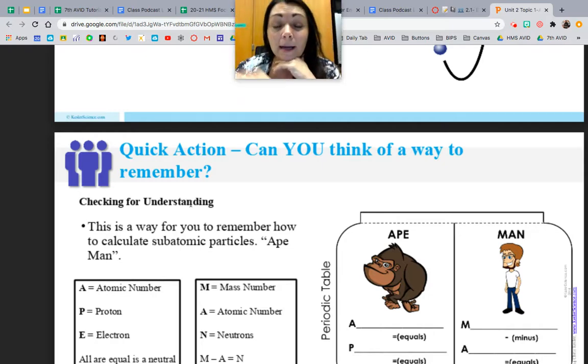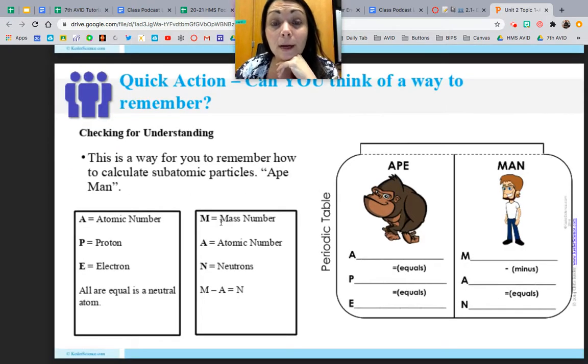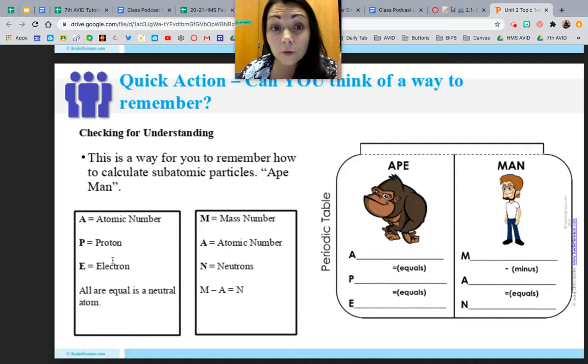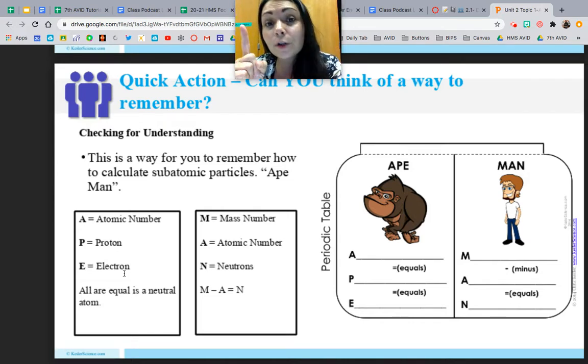So this is called a mnemonic and it's a way that we remember how to calculate the number of protons and electrons. So APE, A-P-E, like an ape, little monkey. So A stands for atomic number, P stands for protons, and E stands for electrons. So y'all, I've talked a lot about this in my other videos. Atomic number is like the fingerprint, the identity. So atomic number equals number of protons and number of electrons. So that's just a nice easy way that we remember if you're getting confused, like is it neutrons, is it electrons, protons? Think of ape. A for atomic number, P for proton, E for electron.